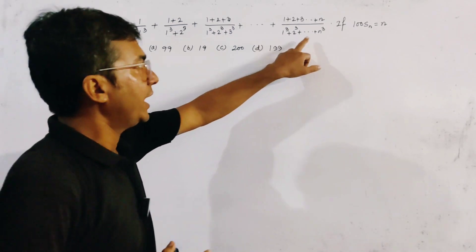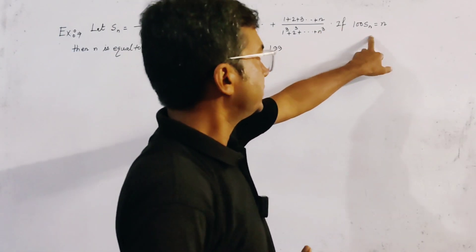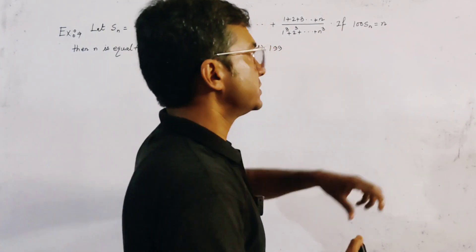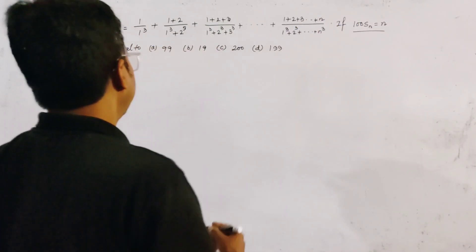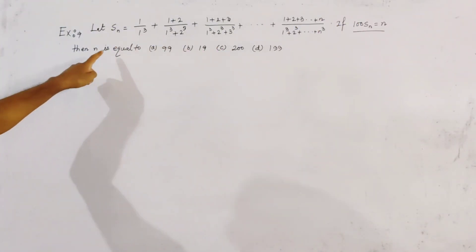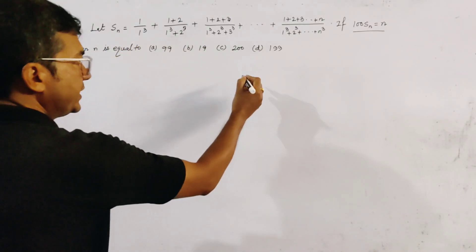If 100 times Sn equals n, this is the given relation, then we have to find the value of n. Four options are given. We first write the general term.